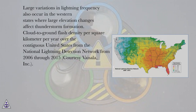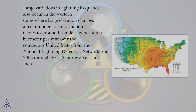Cloud to ground flash density per square kilometer per year over the contiguous United States from the National Lightning Detection Network from 2006 through 2015, courtesy Vashala Inc.